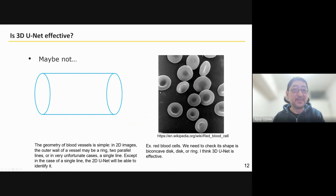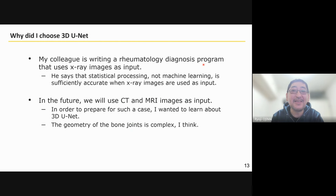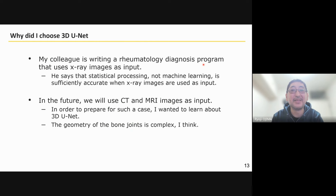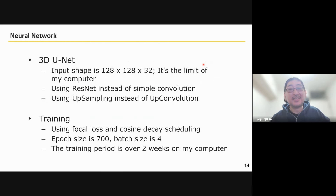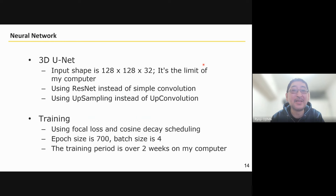The reason I chose 3D UNet is a simple one. A colleague of mine was writing a program for rheumatology diagnosis, and I wondered if 3D UNet could be used to improve its accuracy in the future. I used 3D UNet with an input shape of 128x128x32, which was the limitation of my computer. My neural network features are just the use of ResNet and upsampling only. Training was performed using focal loss and cosine decay scheduling. Epoch size is 700 and batch size is 4. The training took over two weeks on my computer.